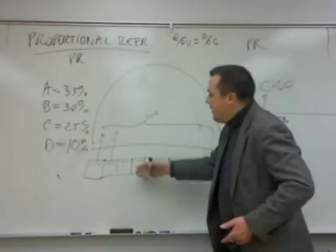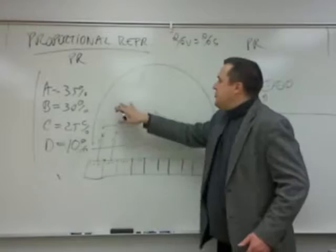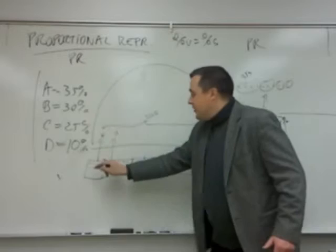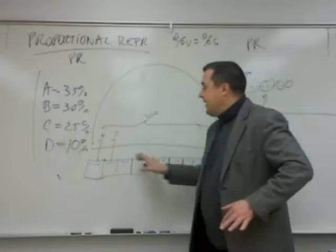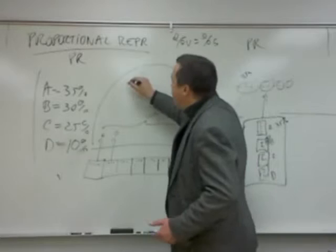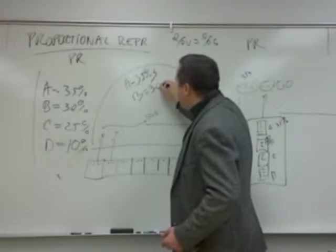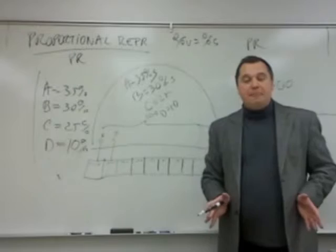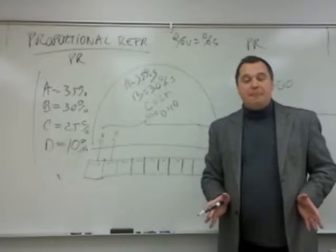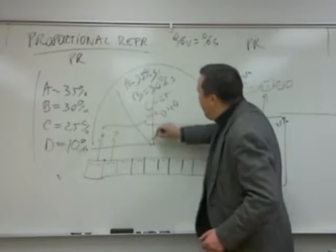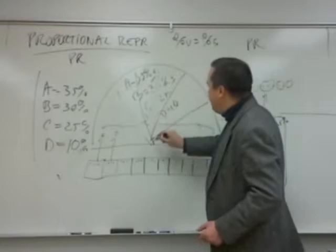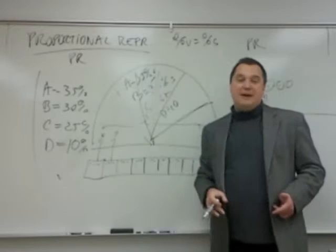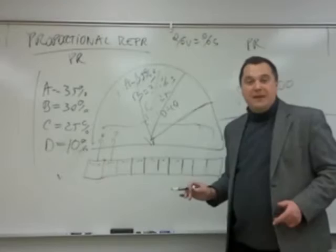Compare this to SMDFTP: in that system party A had all the seats; here the parliament is divided between four parties — one with 35%, one with 30%, one with 25%, one with 10%. Same country, same results, different parliament. This reflects the will of the people. So what are the positives? There are no wasted votes. Even if I vote for a small party, I know my vote will count.